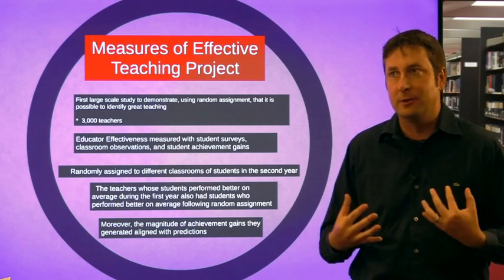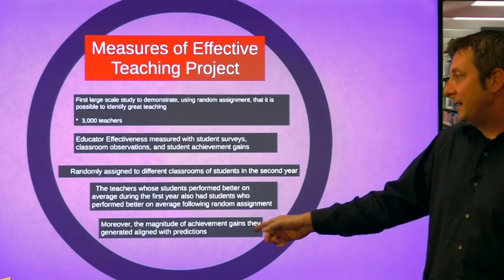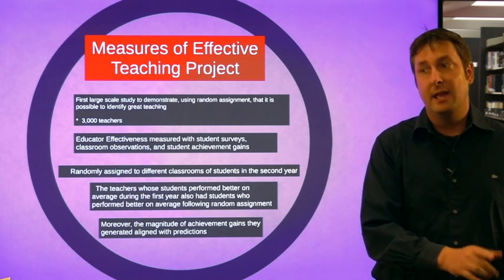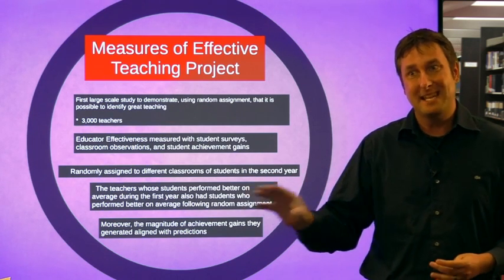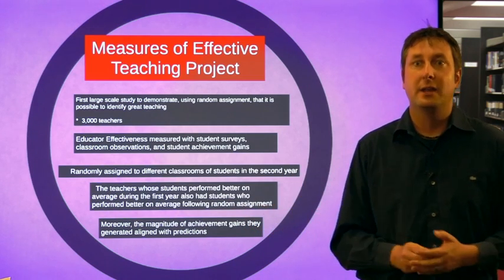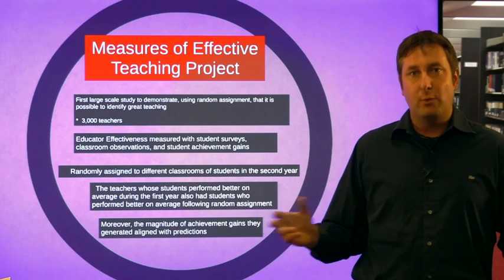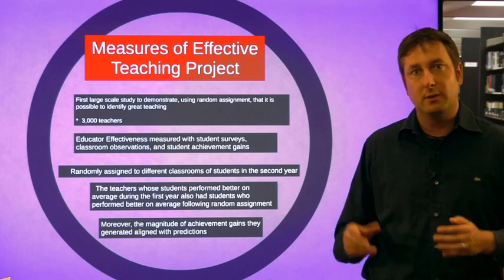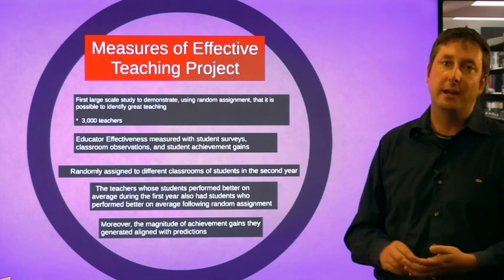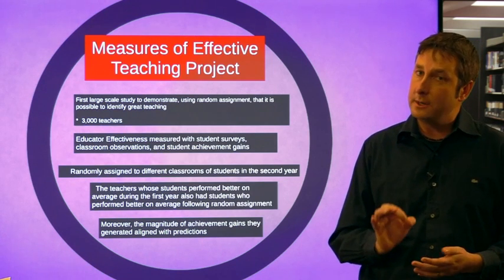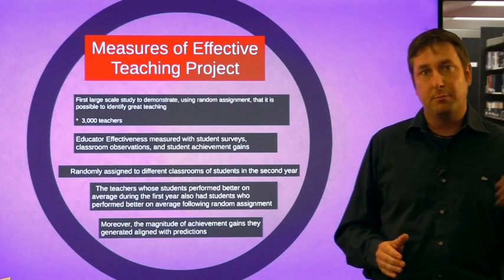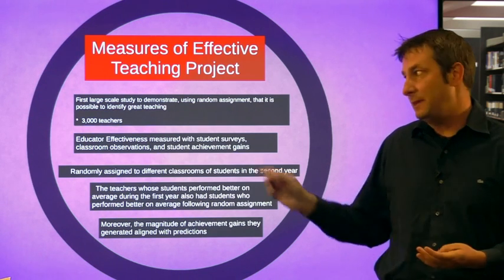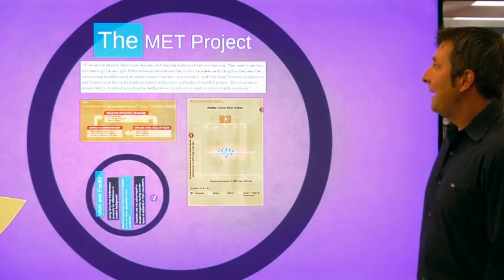The magnitude of achievement gains generated aligned with predictions. If students did really poorly initially and then the teacher was randomly assigned to another group, that same group did really poorly — it wasn't just about being proficient or not. This finding showed that within school, teachers are what matters. Teaching matters within student achievement. Now, we're not saying teachers are what matters for proficiency — teaching matters in growth, in the gains students have throughout their time in the classroom.